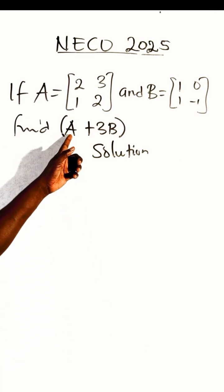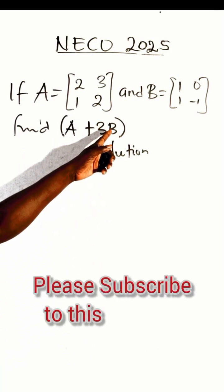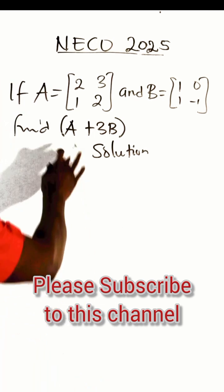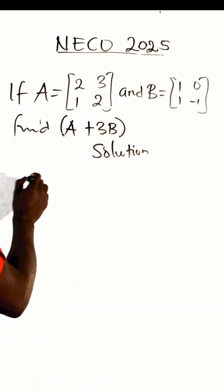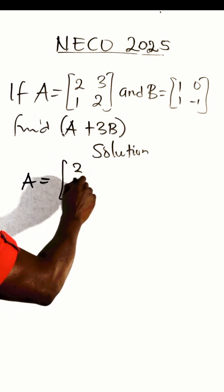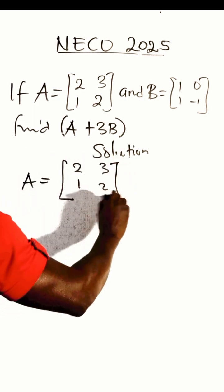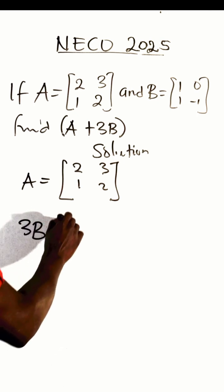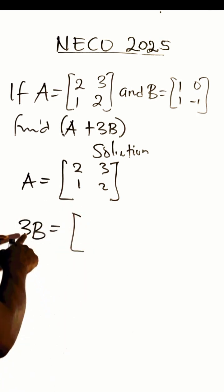Let's quickly add this A to 3 of B of these matrices. So here A remains as the matrix of 2, 1, 3, 2. Then the 3B matrix will be a new matrix whereby 3 will be multiplying all the elements here.